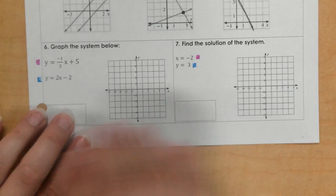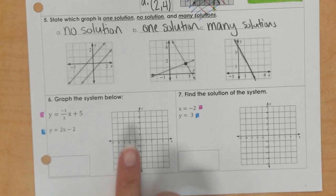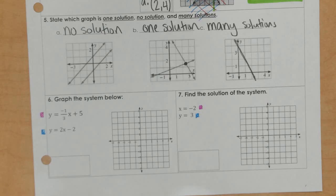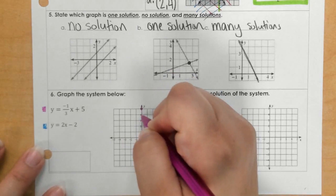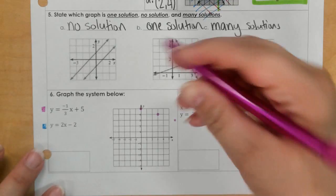For number 6, we're going to go ahead and graph negative 1/3x plus 5. We need to start with 5 on the y-axis, and then from that 5, we're going to go down 1, right 3. We'll be off the graph a little bit.